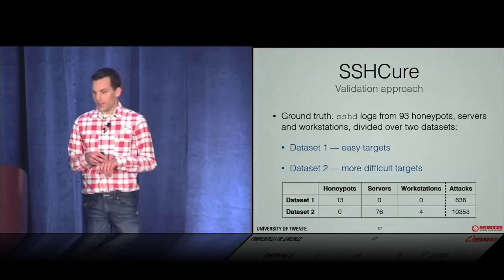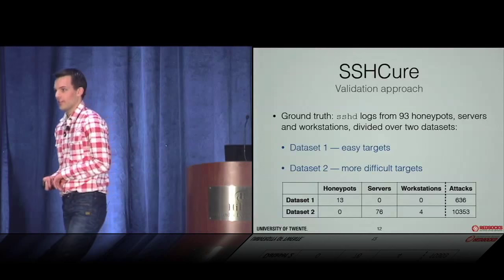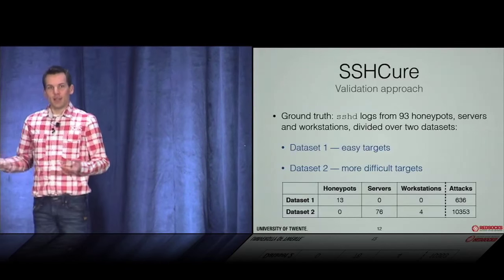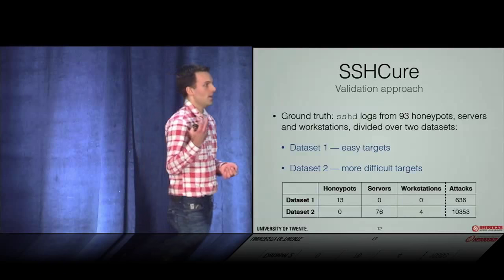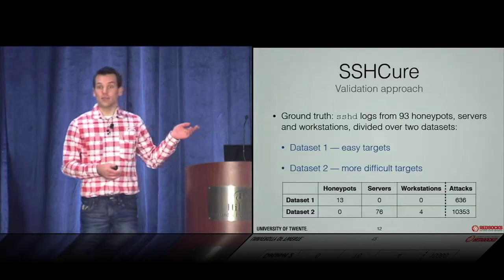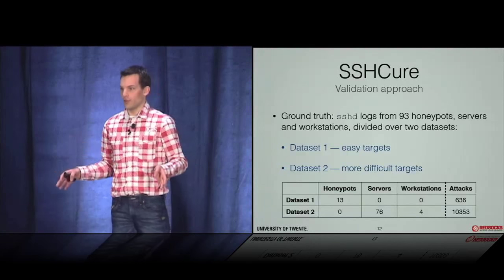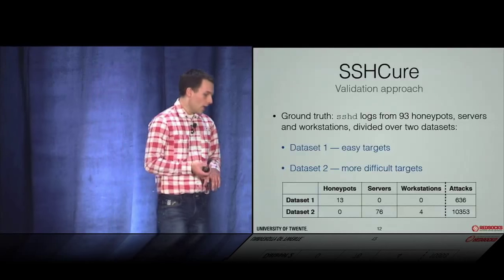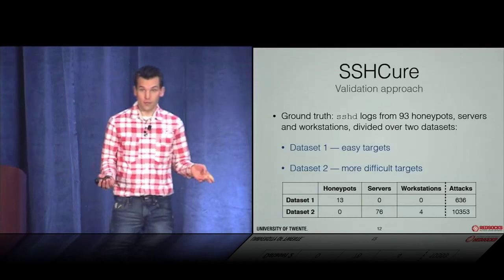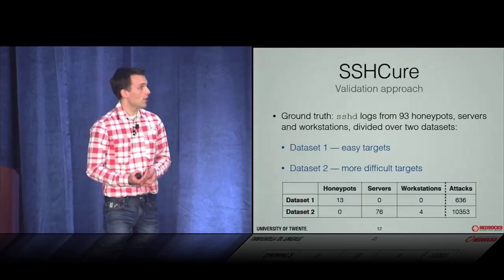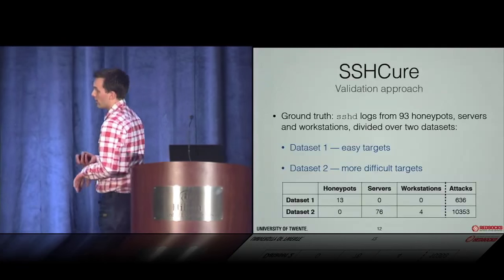It was a nice surprise that the keynote today discussed scientific work, validation, and reproducibility. As good scientific practice, you have to validate your work and be transparent about detection results. We published all the datasets, the software, and the algorithm so people can reproduce the results. The only real way to prove an IDS works is by having ground truth — in our case, SSHD logs collected from 93 machines in our campus network, including honeypots, servers, and workstations.